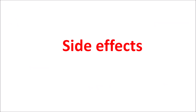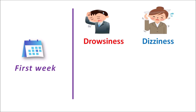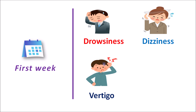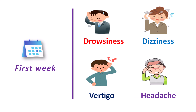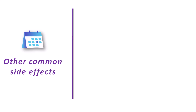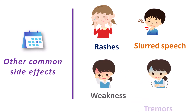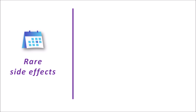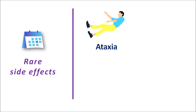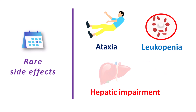Within the first week of treatment, Oxegepom can produce side effects like drowsiness, dizziness, sedation, increased vertigo, reeling sensation, headache and confusion. Other common side effects include skin rashes, skin eruptions, skin blisters, slurred speech, weakness and tremor. Rare side effects include ataxia and loss of balance due to motor incoordination, leukopenia, and hepatic impairment resulting in jaundice-like conditions, though these are observed only in a few people.